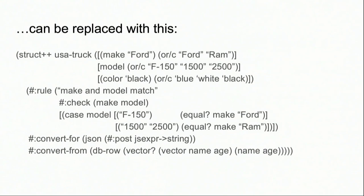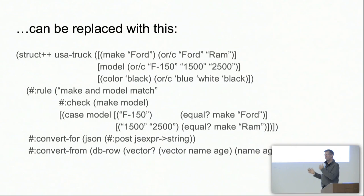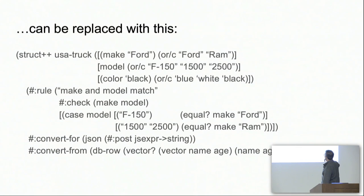If the model is F-150, then the make has to be Ford; if it's 1500 or 2500, it has to be Ram. By the way, raise your hand if you knew that Dodge trucks are put out under the Ram brand — I did not know that when I put this talk together. We also have a convert-for rule that turns a truck into a JSON string, and a convert-from rule that takes a database row and turns it into a truck.